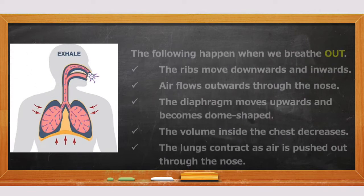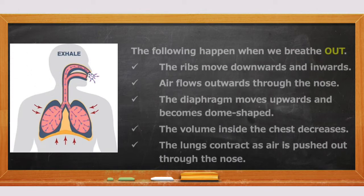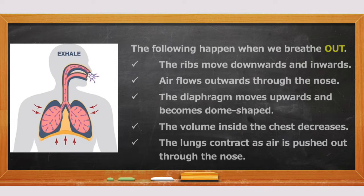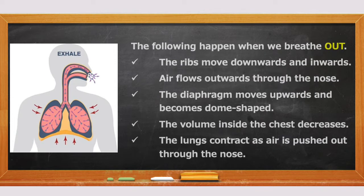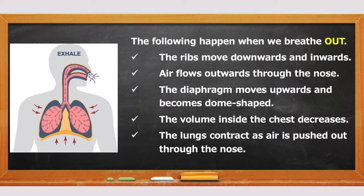Air flows outwards through the nose. The diaphragm moves upwards and becomes dome-shaped. The volume inside the chest decreases. And the lungs contract as air is pushed out through the nose.